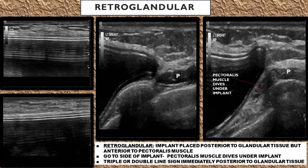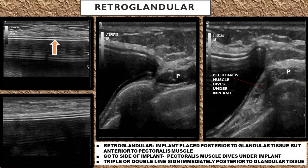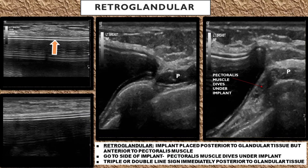For a retroglandular implant, you go to the side of the implant and the pectoralis muscle, which is striated in appearance, is going to dive down under the implant. You're going to visualize in the anterior portion of the implant the triple or double line sign of the fibrous capsule and the implant shell, immediately posterior to the glandular tissue layer. Although it's really tricky to see that fibrous capsule layer, really pay attention to your implant shell wall when it's a retroglandular implant placement, because the implant shell is going to be one of your most recognizable structures.